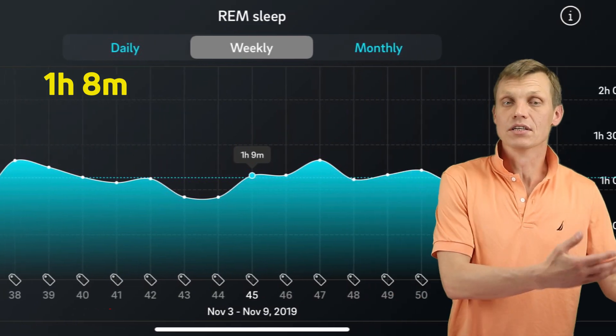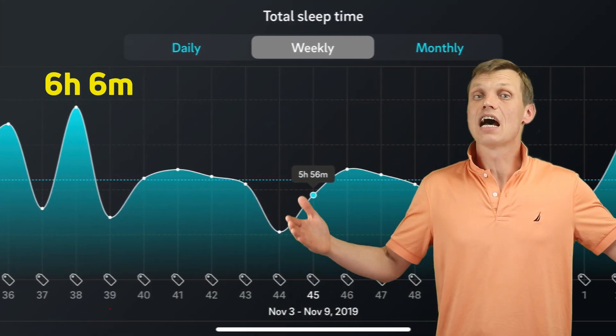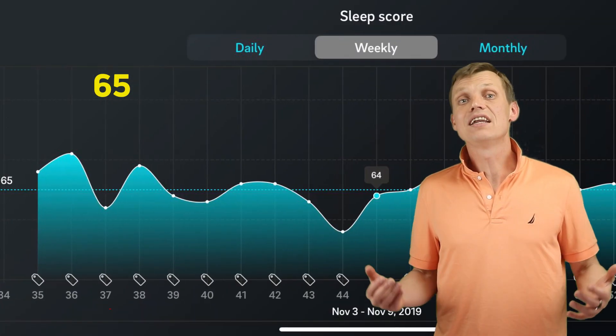Latency – 7 minutes. REM sleep – 1 hour 8 minutes. Deep sleep – 29 minutes. Total sleep time – 6 hours and 6 minutes. And finally, sleep score – 65. That's a ton of data to review and analyze. Almost too much, but I like the challenge.